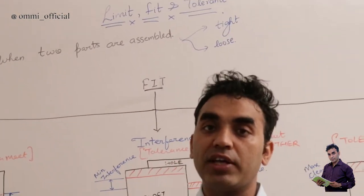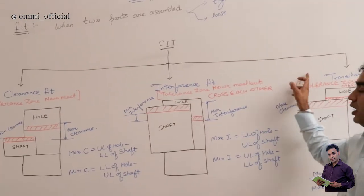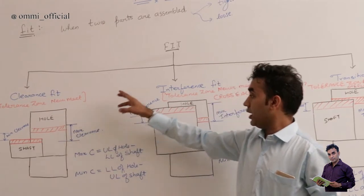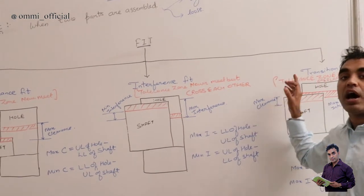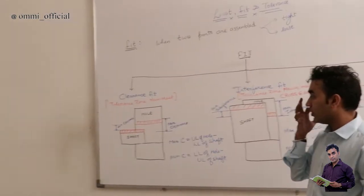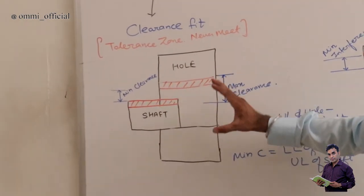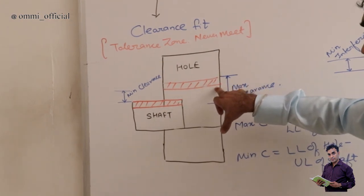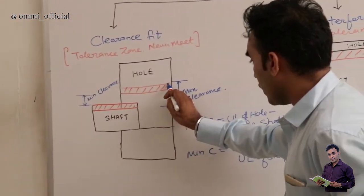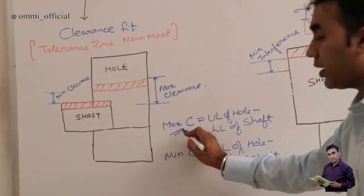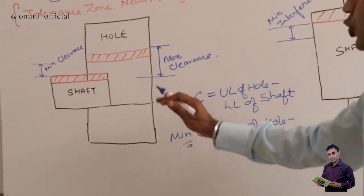Now we move on to fit. When two parts are assembled, there are two possibilities: it could be tight or loose. We categorize fit into three types: clearance fit, interference fit, and transition fit. In clearance fit, the tolerance zones never meet. In interference fit, the tolerance zones cross each other. In transition fit, the tolerance zones always overlap. For clearance fit, looking at the diagram with a hole and shaft, the difference between the upper limit of the hole and lower limit of the shaft gives maximum clearance, while lower limit of the hole minus maximum limit of the shaft gives minimum clearance — always a loose fit.